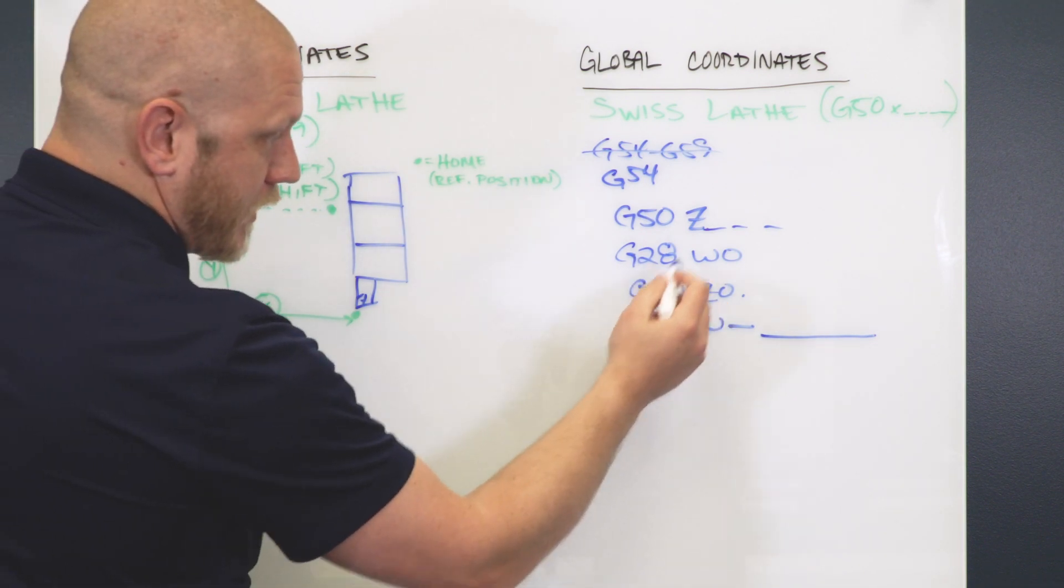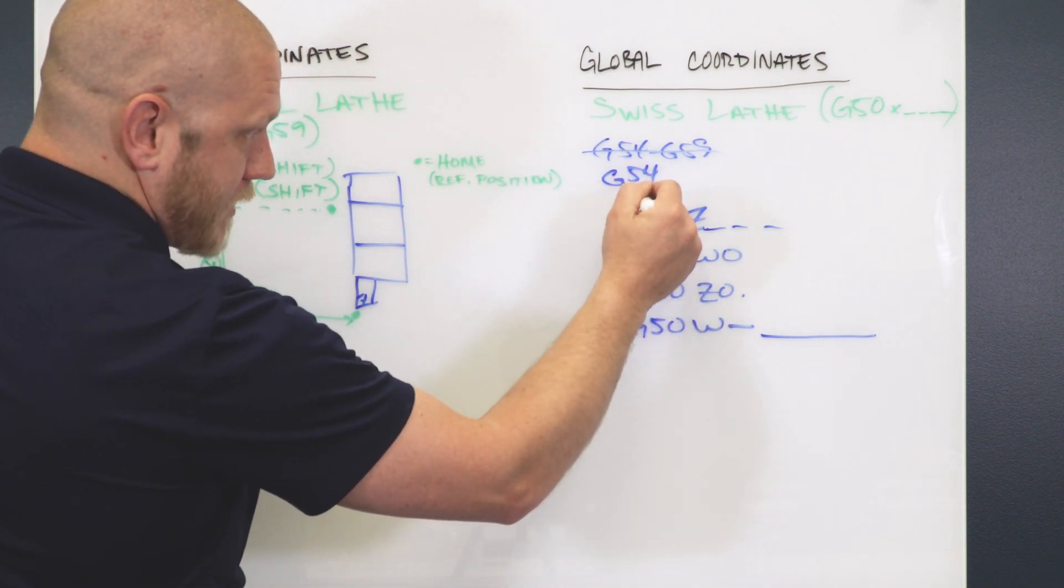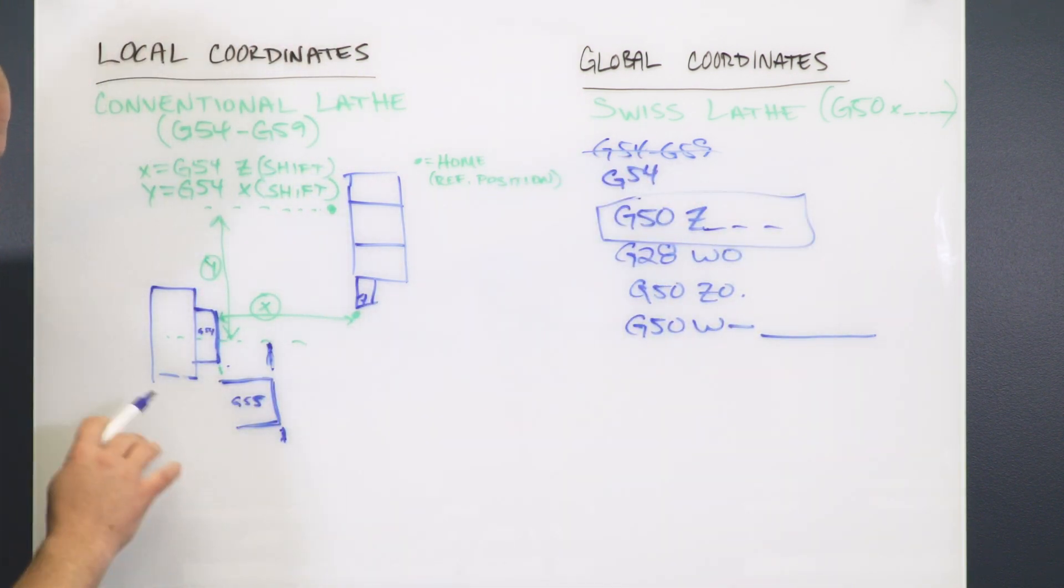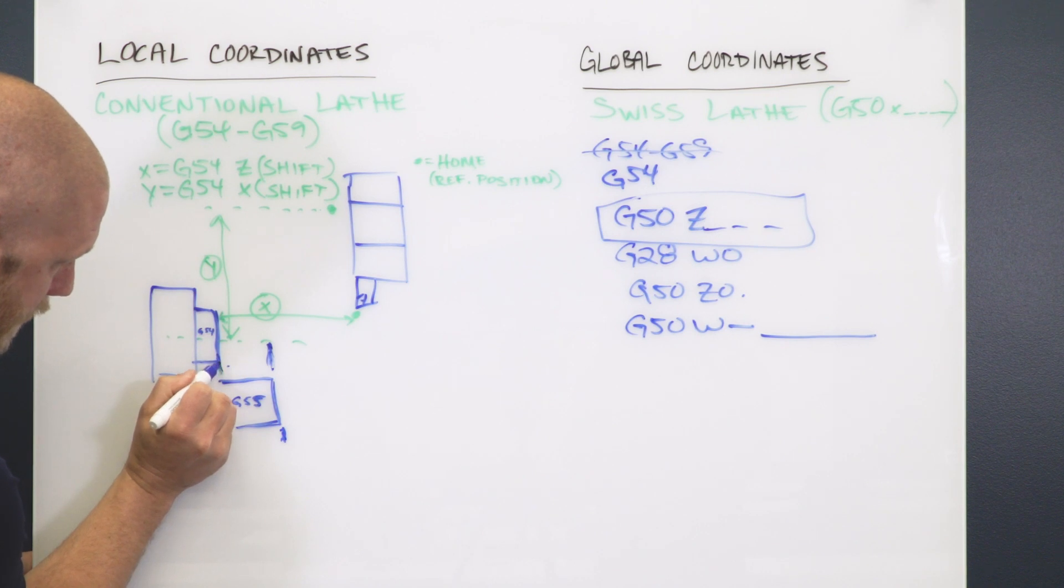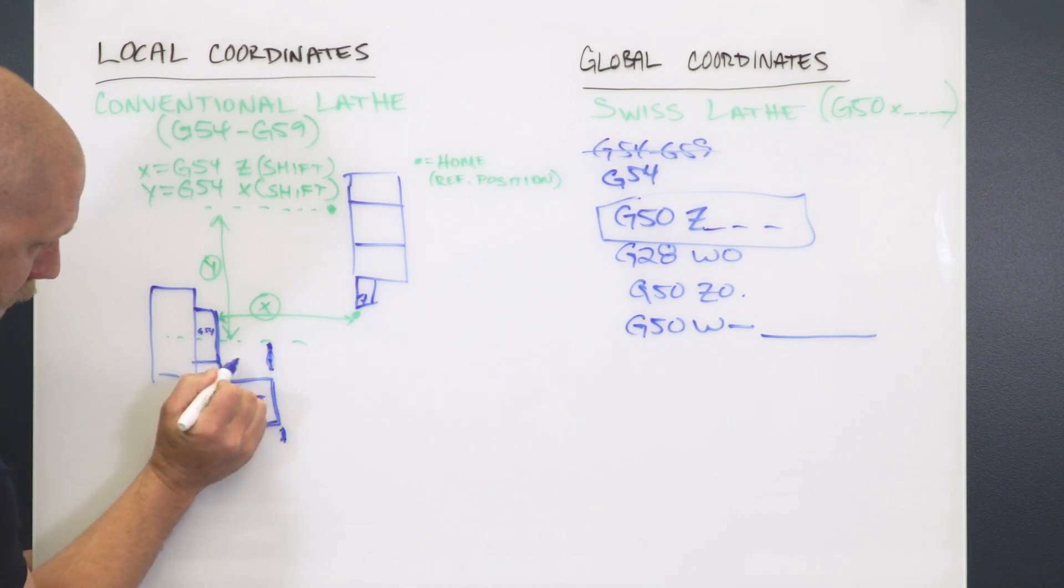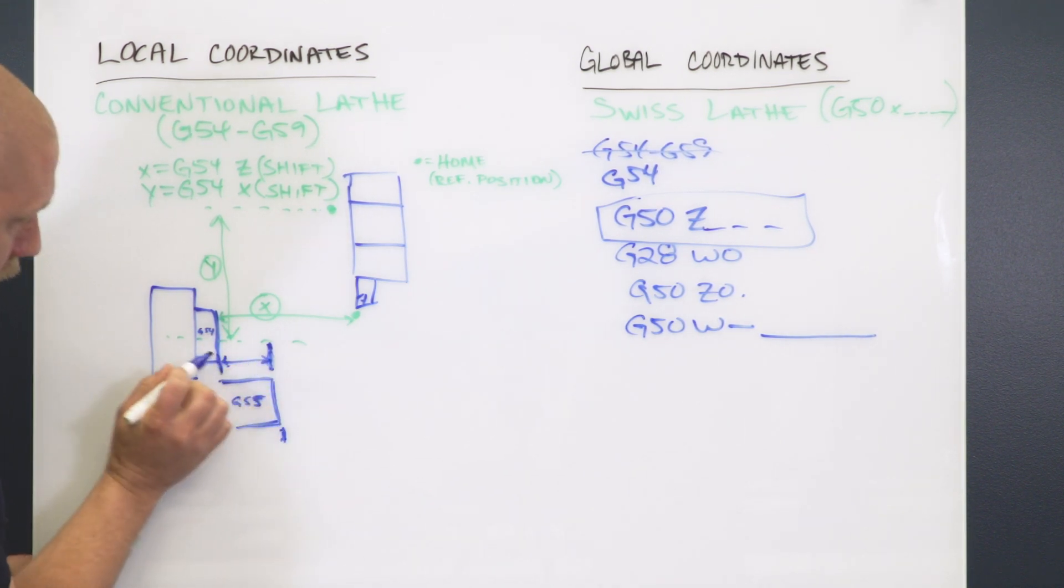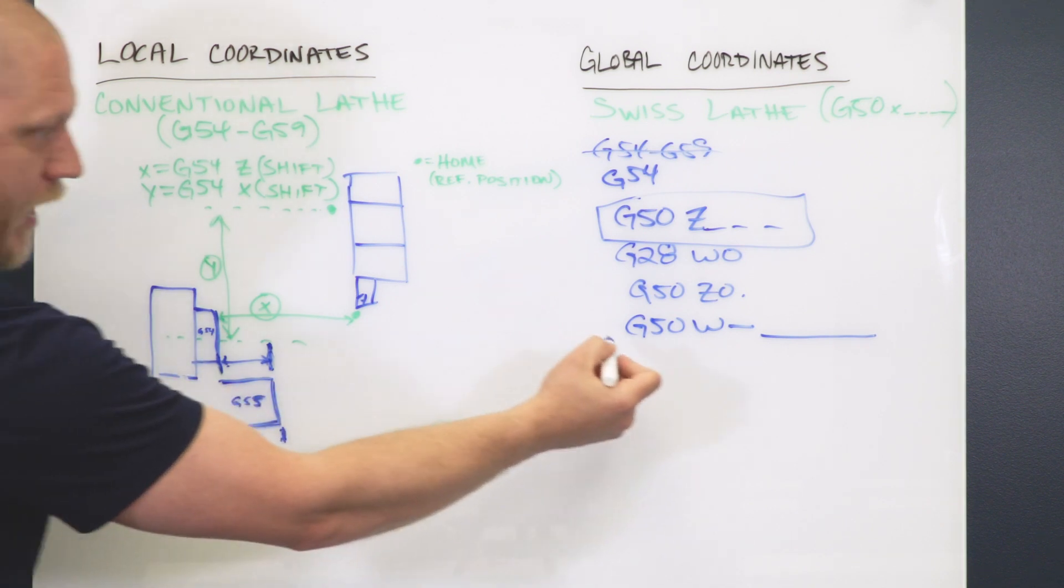And now it's basically going to do the same thing as this. It's going to set the same coordinate system. So I can say G50 W minus. That's going to be the relative distance from here to here. How much did I move from my standard Z0? I would shift that amount.